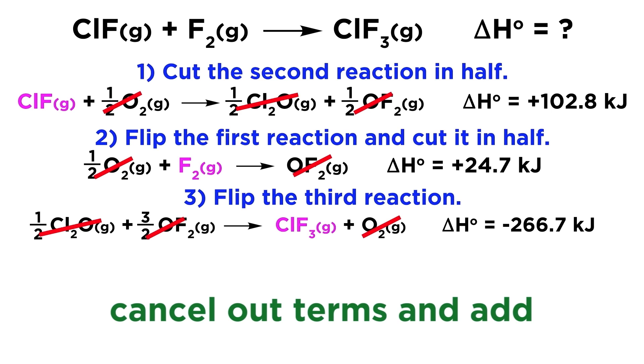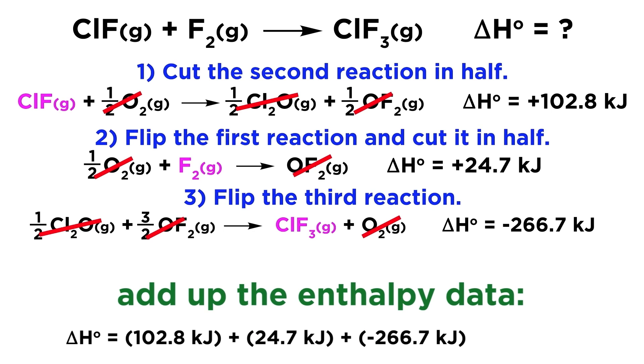And we are left with precisely the substances we need to get the equation in question, and in the right positions. So we simply add up the enthalpy data that corresponds to these reactions, and that will be our answer. So we just find 102.8 plus 24.7 plus negative 266.7, and we get negative 139.2 kilojoules. And this is the change in enthalpy for this reaction, which we derived using Hess's law.